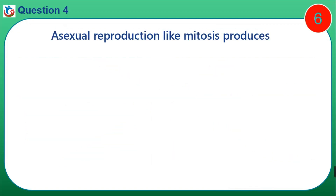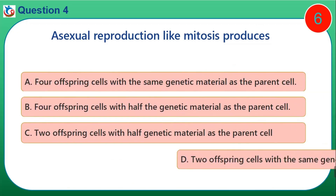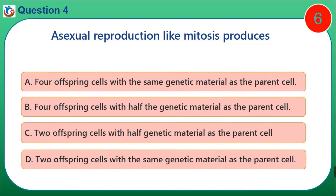Question 4. Asexual reproduction like mitosis produces: A. Four offspring cells with the same genetic material as the parent cell. B. Four offspring cells with half the genetic material as the parent cell. C. Two offspring cells with half the genetic material as the parent cell. D. Two offspring cells with the same genetic material as the parent cell.